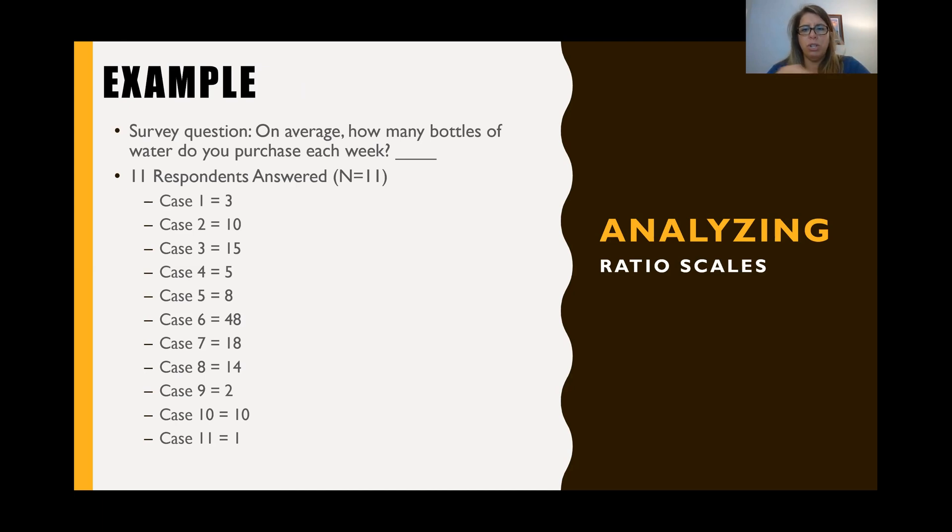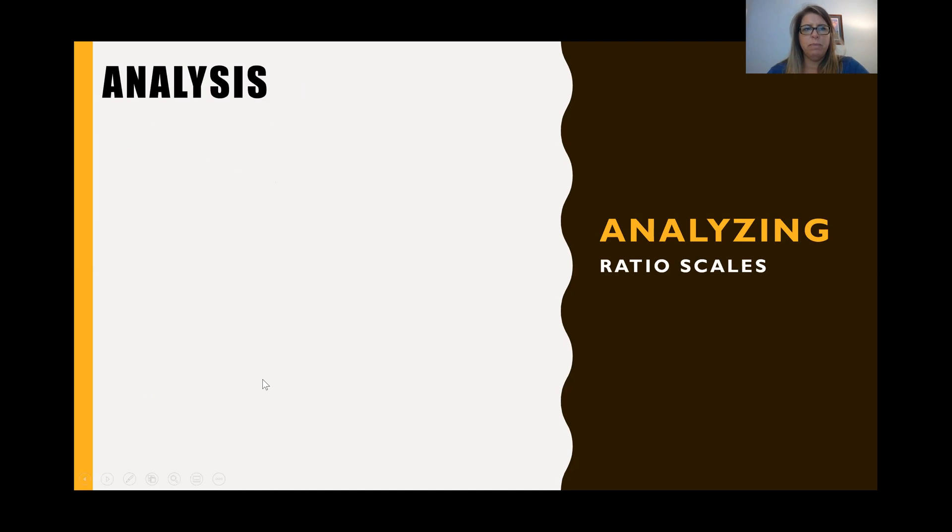So what does a ratio analysis look like? Well, if we took the survey question on average, how many bottles of water do you purchase each week? And we had all these 11 cases and their answers. And we put them in order. And we found the mode, which is 10. We found the median, which is right in the middle, which is 10. And we find the mean is 12.2.